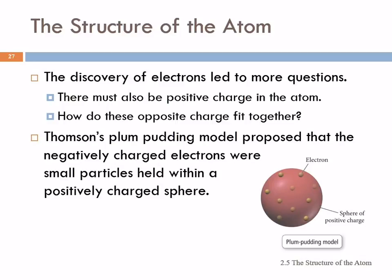In a blueberry muffin, you've got the muffin stuff - the cakey part - and then there's blueberries kind of spotted throughout. Or you can think about a chocolate chip cookie. In this model, the negatively charged electrons are like the blueberries in the muffin, and they are inside of this larger body of the muffin itself. This was his idea of what the atom was like. As a scientist, you don't just have ideas and let them sit there - you test them to see if they're correct.